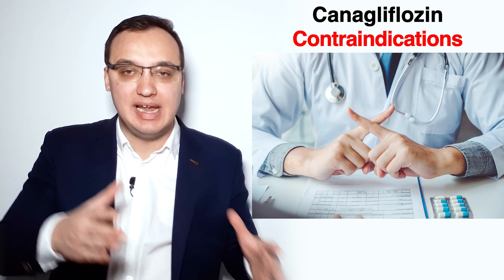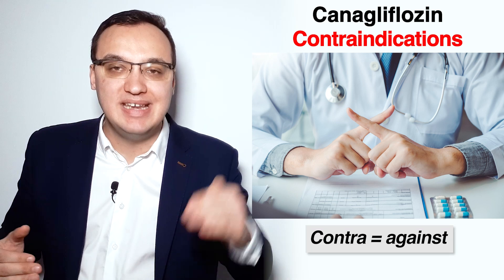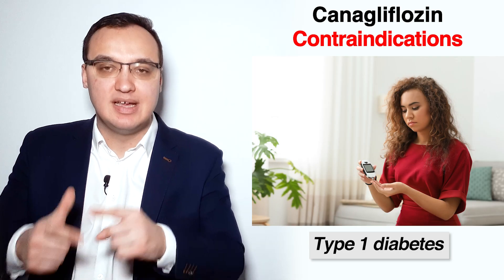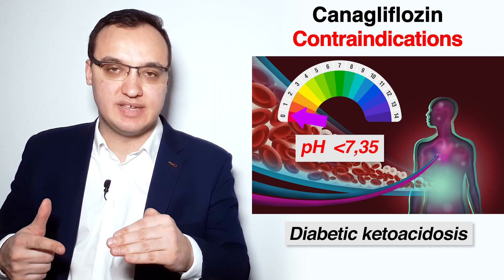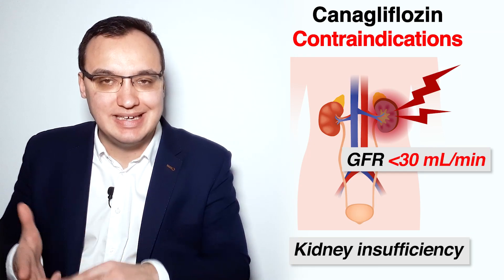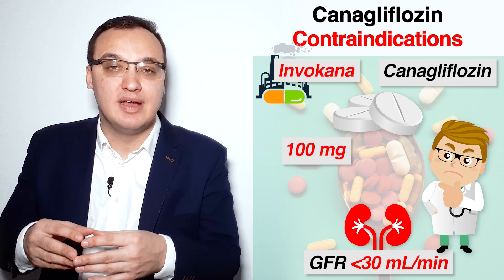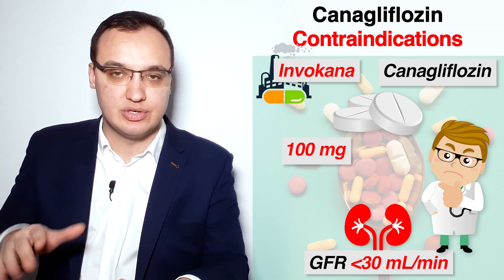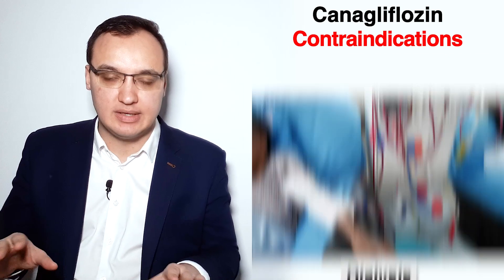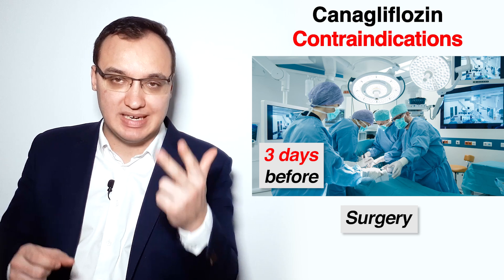The contraindications of Canagliflozin include: type 1 diabetes, diabetic ketoacidosis (pH less than 7.35), hypotension (blood pressure less than 90/60 mmHg), and kidney insufficiency with a GFR of less than 30 ml per minute — though patients already on 100 mg may continue at the doctor's discretion. Patients on dialysis are not allowed to receive Canagliflozin. Surgery is another contraindication; it is recommended to stop this medication three days before surgery to prevent ketoacidosis.